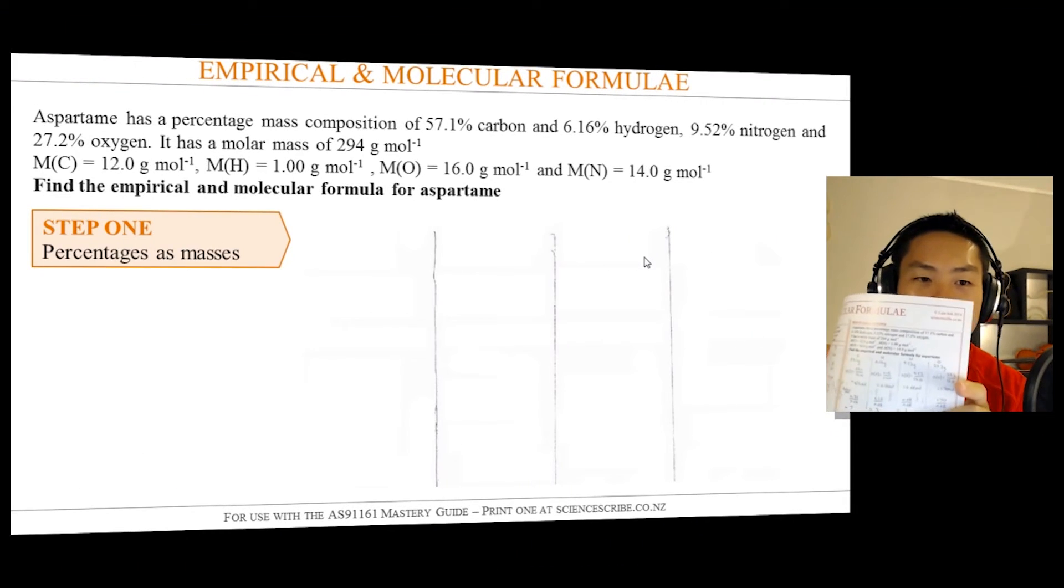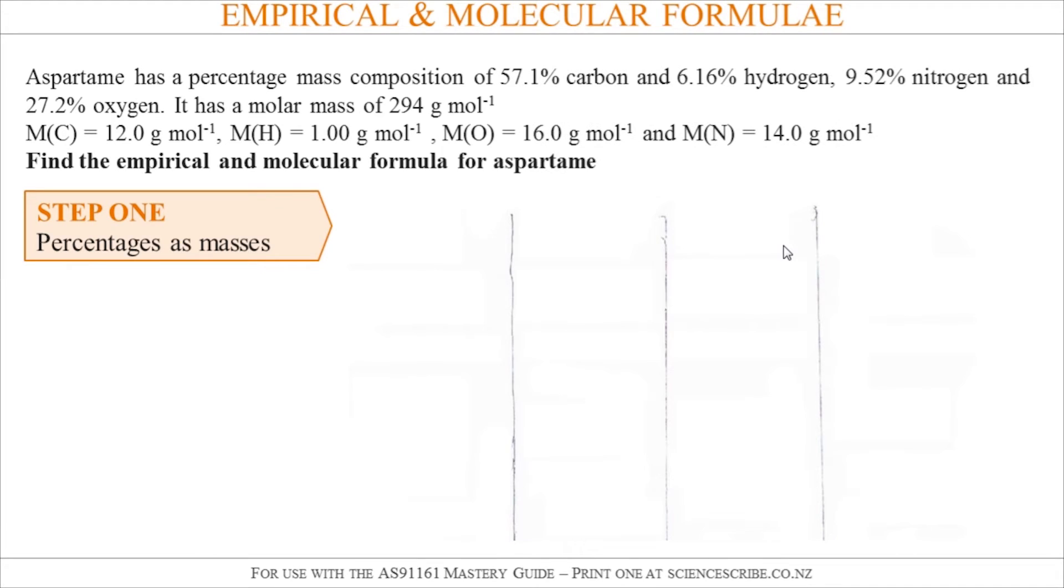In front of me here I'll be referring to the right-hand side of that page with an example question with aspartame with a mass composition of 57.1% carbon, 6.16% hydrogen, and so on.